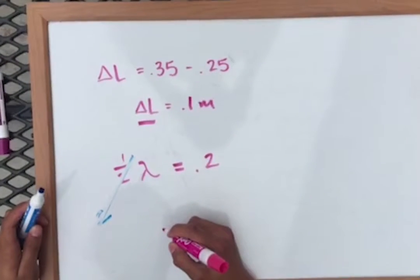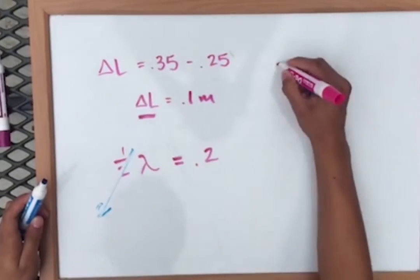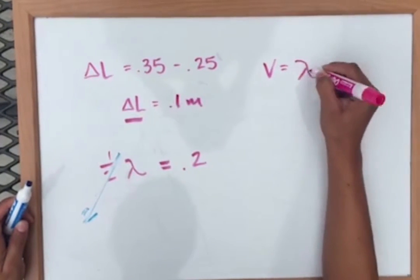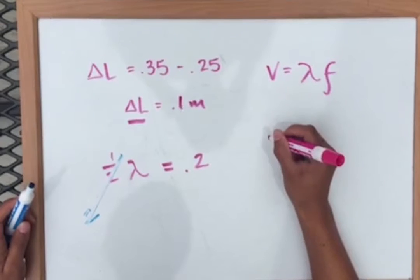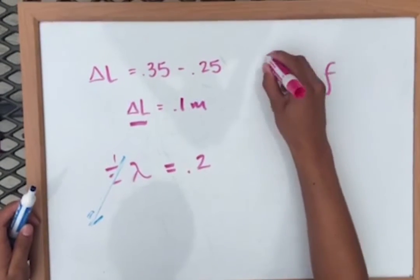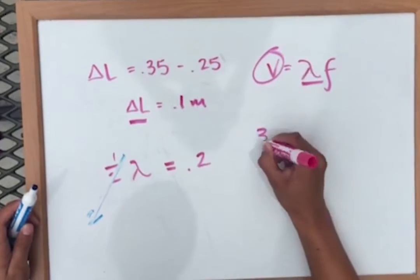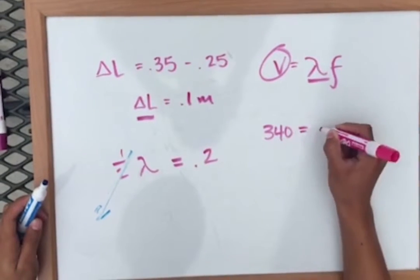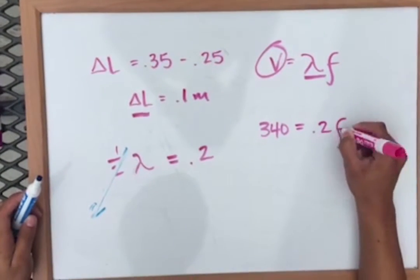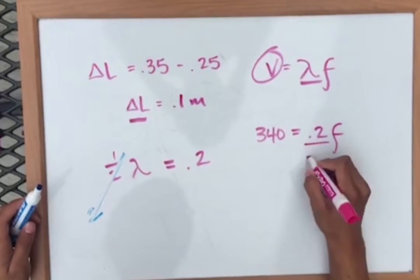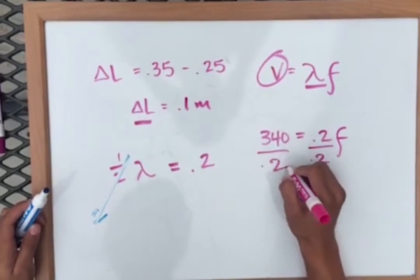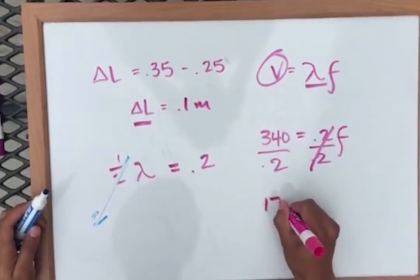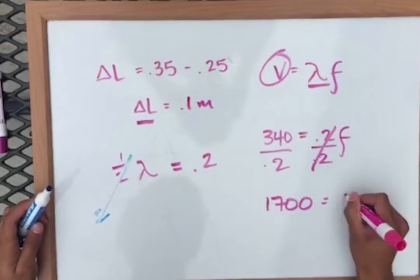You're going to plug that answer into the equation of velocity equals lambda times frequency. You already have the values for velocity and lambda, so you plug those in. And 0.2 divided by 340 comes out to 1,700, which is the answer.